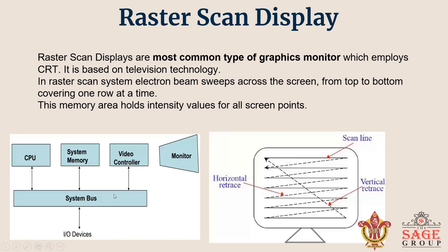Here you can see the diagram — this is the architecture of the raster scan display. In this, each screen point is refreshed with the pixel. At the end of each line, the electron beam returns to the left side of the screen to begin displaying the next line.